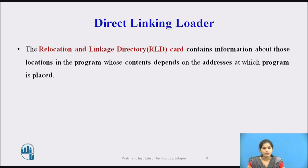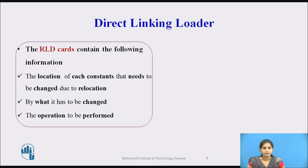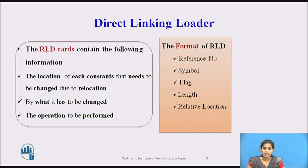For such locations, the assembler must supply information enabling the loader to correct their content. The RLD card contains: the location of each constant that needs to be changed due to relocation, by what amount it has to be changed, and the operations to be performed. The format of the RLD card contains the reference number, symbol, flag, length, and relative location.